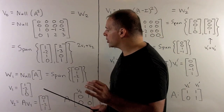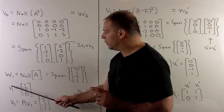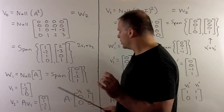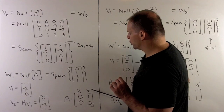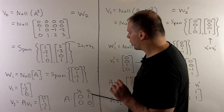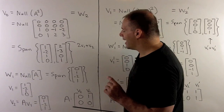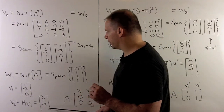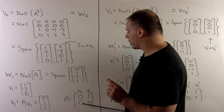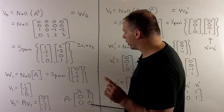Now, what does A look like with respect to this basis? A sends V1 to V2, so the column for V1 has coefficient 0 for V1 and coefficient 1 for V2. A sends V2 to 0, so both coefficients are 0. This gives our Jordan block for eigenvalue 0.